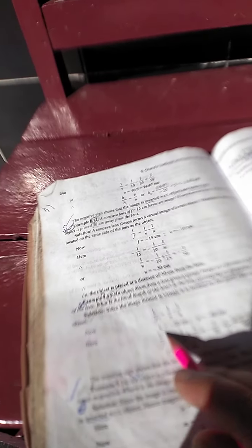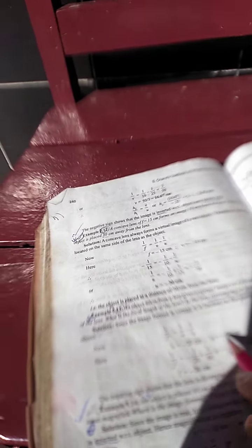So v is given as -20 centimeters. The plus or minus sign won't be given in the question, so we have to determine it. Since the image is virtual, not real, the minus sign is there: v = -20 cm. And u, the object distance, is always negative, so u = -60 centimeters.